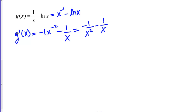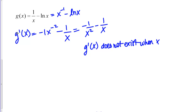Let's think about points where g′(x) does not exist. We have x's in the denominator of our fractions, so g′(x) does not exist when x = 0. I'll make a note of this — it looks like x = 0 might be a critical point, but we need to be really careful.